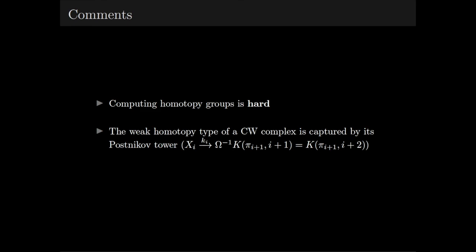These are obtained from the Postnikov tower by looking at the fibration between X_{i-1} and X_i. The fiber of this map is an Eilenberg-MacLane space with π_i in dimension i+1.